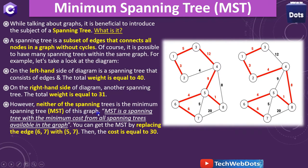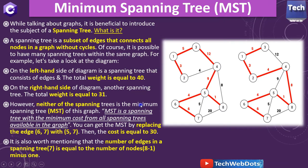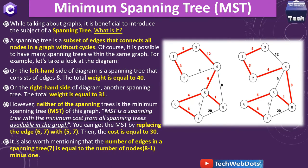However, neither of those spanning trees is the minimum spanning tree of this graph. The minimum spanning tree is a spanning tree with the minimum cost from all spanning trees available in the graph. You can get the MST by replacing the edge 6-to-7 with weight six with an edge 5-to-7 with weight five, giving a cost of 30. It is also worth mentioning that the number of edges in the spanning tree equals the number of nodes minus one — with eight nodes, the MST will have seven edges.